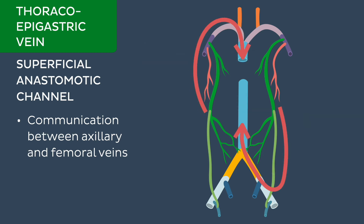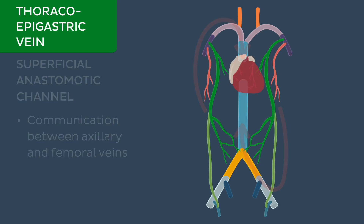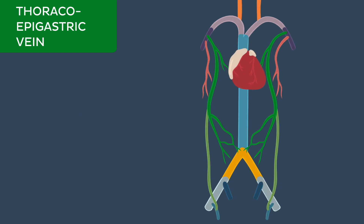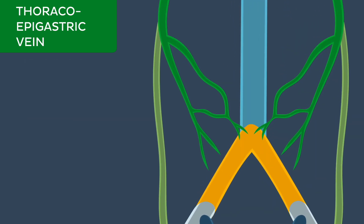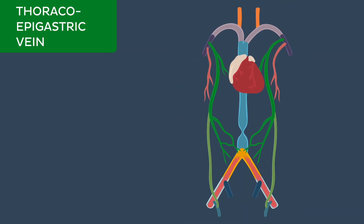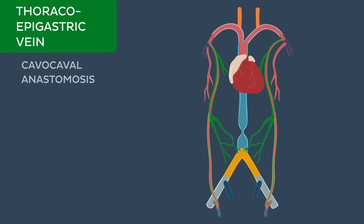This may provide a collateral circulation pathway during obstruction or compression of either vena cava. For example, if the inferior vena cava becomes obstructed or compressed due to an abdominal malignancy, venous blood can return to the superior vena cava and then the heart through this venous communication. That's why this is called a cava-caval anastomosis.